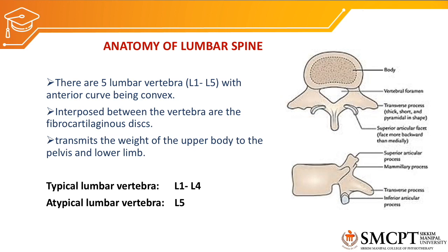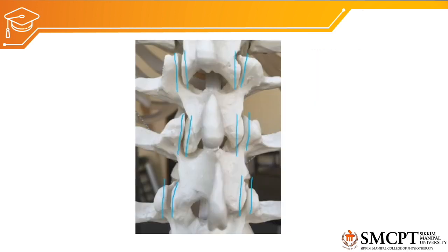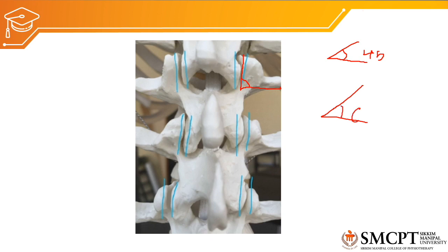We will focus on the alignment of the facet joint for the lumbar vertebral spine. As you can see in the picture, the alignment of the facet joint is nearly 90 degrees to the horizontal plane, and the orientation of the facet joint is more in the sagittal plane compared to thoracic and cervical facet joint orientation. In the cervical facet joint the orientation was around 45 degrees to the horizontal plane, in the thoracic spine around 60 degrees, whereas in the lumbar spine it is nearly 90 degrees.